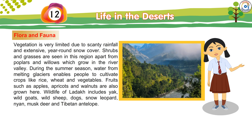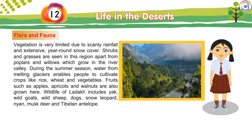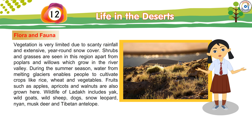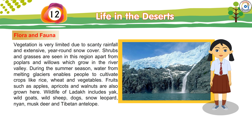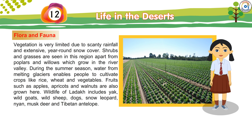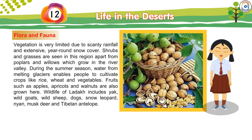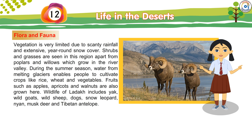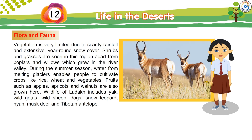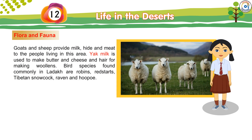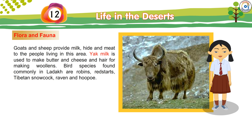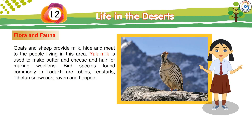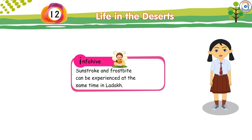Flora and Fauna: Vegetation is very limited due to scanty rainfall and extensive year-round snow cover. Shrubs and grasses are seen in this region, apart from poplars and willows which grow in the river valley. During the summer season, water from melting glaciers enables people to cultivate crops like rice, wheat, and vegetables. Fruits such as apples, apricots, and walnuts are also grown here. Wildlife of Ladakh includes yak, wild goats, wild sheep, dogs, snow leopard, nyan, musk deer, and Tibetan antelope. Goats and sheep provide milk, hide, and meat to the people living in this area. Yak milk is used to make butter and cheese, and yak hair is used for making woollens. Bird species found commonly in Ladakh are robins, redstarts, Tibetan snowcock, raven, and hoopoe. Info Hive: Sunstroke and frostbite can be experienced at the same time in the life of the people.